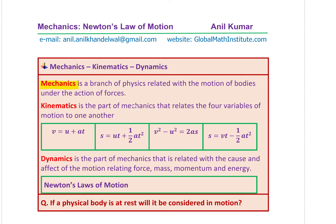Kinematics is the part of mechanics that relates the four variables of motion to one another, which you learned earlier — V, U, A, T — the velocities initial and final, acceleration and time, and also displacement. So these are actually the five variables. You can say four with respect to time, all the functions of time. With these variables you learned earlier the relations between these variables — S, U, A, V.